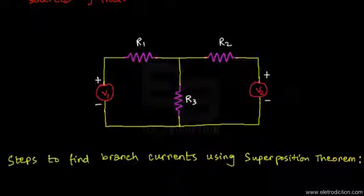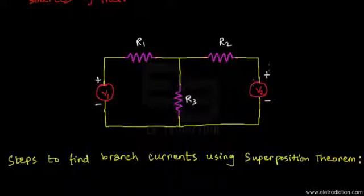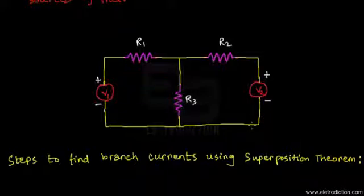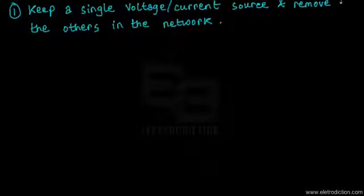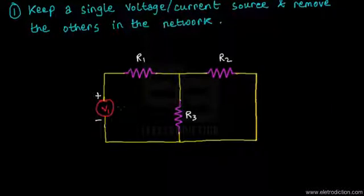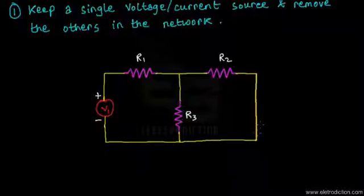I choose to remove V2. As you'll have learned in previous tutorials, to remove a voltage source you simply short that path, and to remove a current source you open the terminals across which it is connected. Since V2 is a voltage source, we short it, giving us a simplified network with only V1 active.